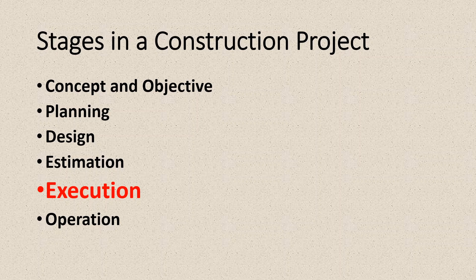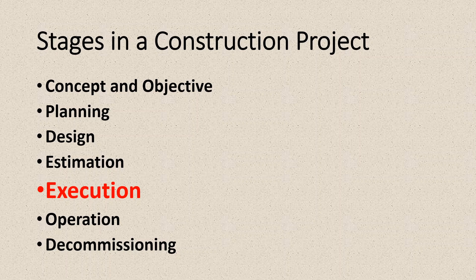Then comes decommissioning. This is when a project is considered to have served its useful lifetime, which may be 10 years, 50 years, or even 100 years. After that, it is either scrapped or upgraded to a new version — for example, you dismantle one building and in its place construct a big apartment. In this phase, the liabilities of the construction manager finally end.